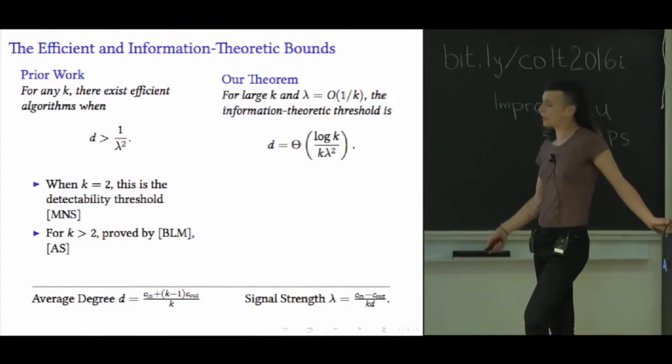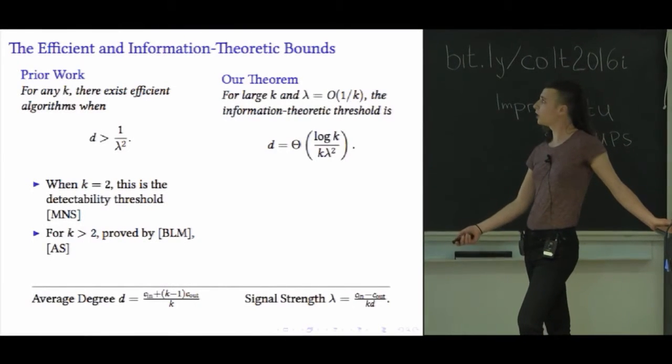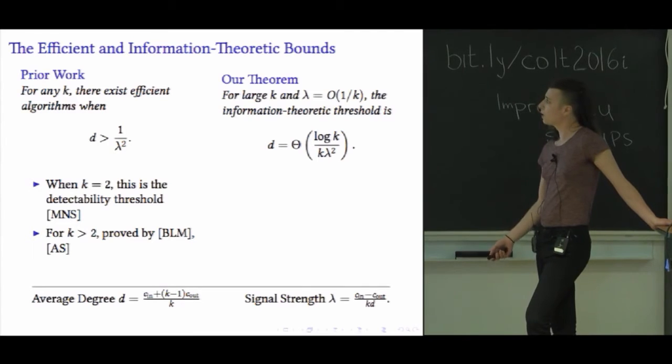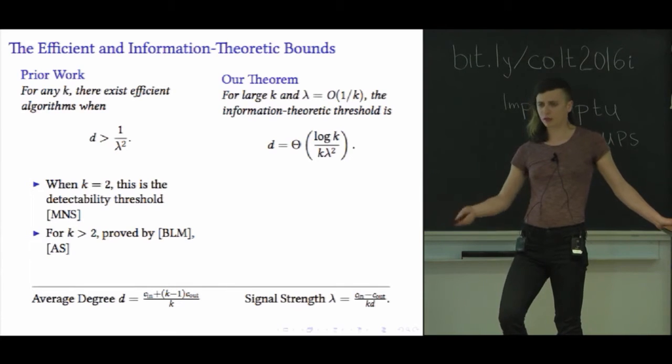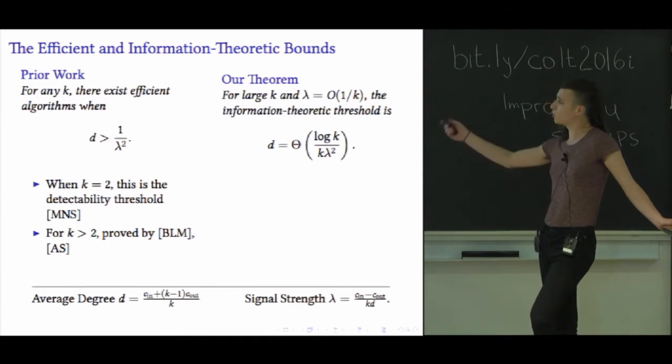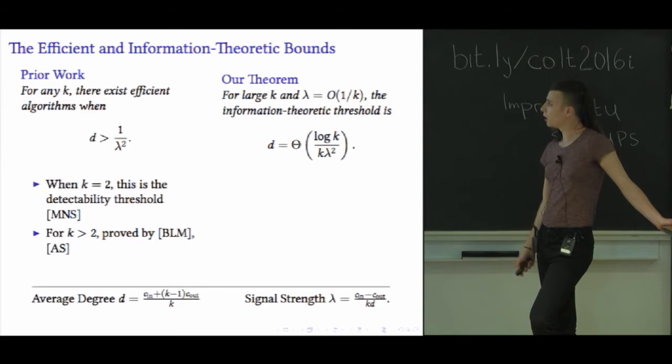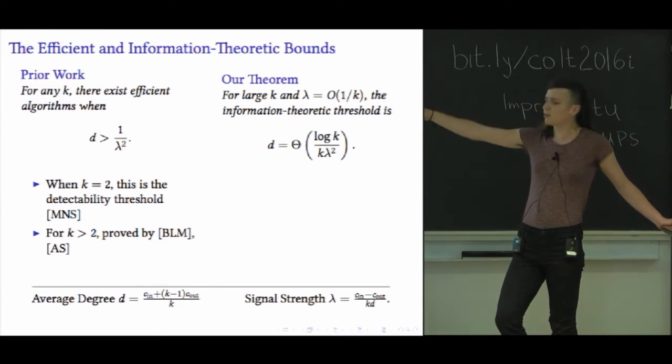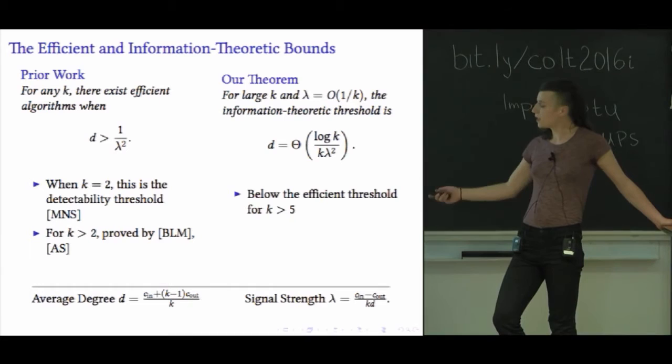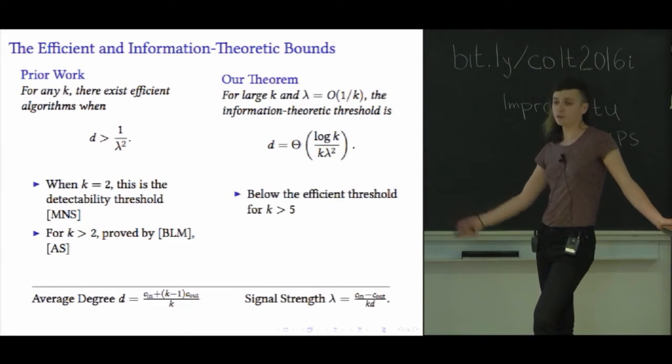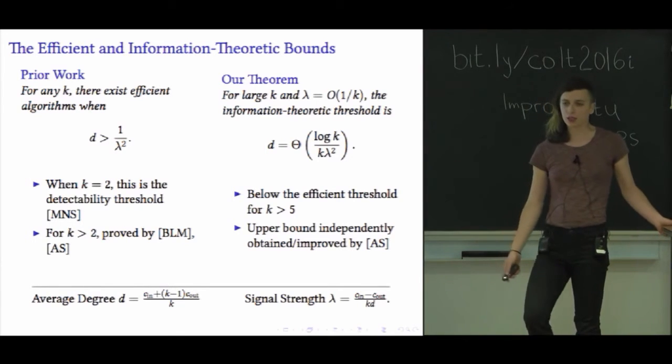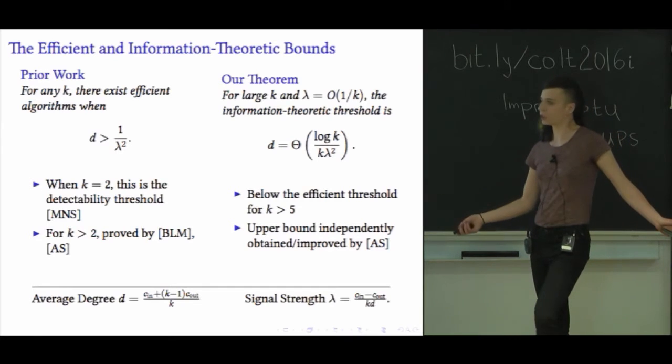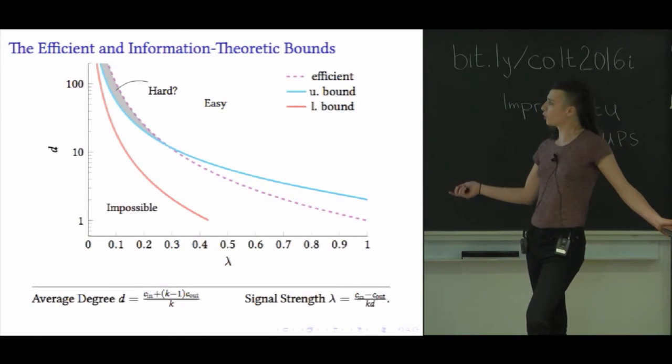But our work is a little different. It focuses on the information theoretic fundamental possibility or impossibility of the hypothesis testing and statistical inference tasks. The theorem is as follows: when k gets large and lambda is shrinking as about 1/k, the information theoretic threshold is when d scales about like (log k)/k * lambda^2. We have more exact results, but they're nice and tight in this asymptotic regime. Right away you can see that because of this (log k)/k factor, this threshold actually dips below the threshold where efficient algorithms work. Based on our upper bounds, this happens when the number of groups is only 5. This upper bound was obtained independently by Abbe and Sandin and in fact improved a little bit.